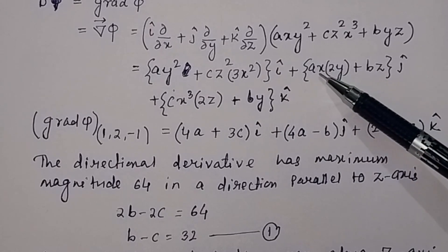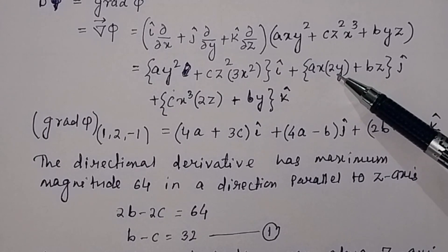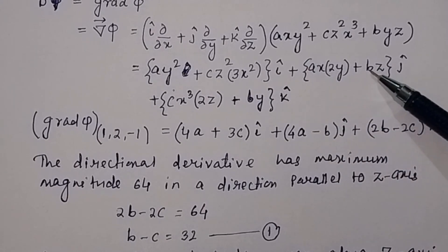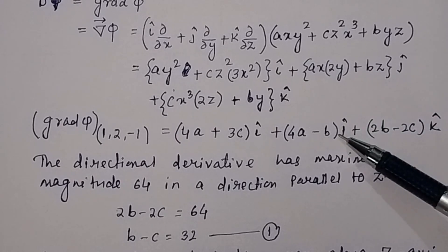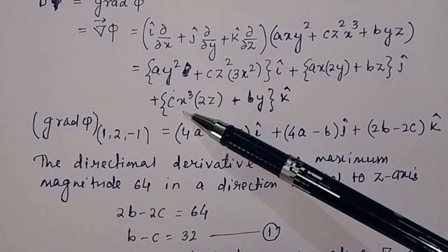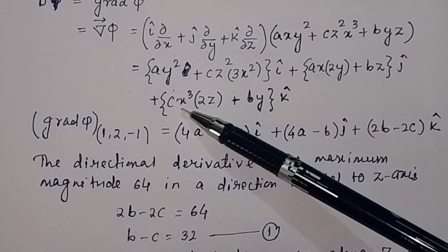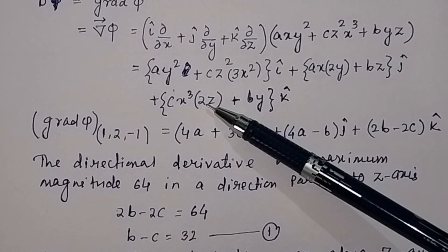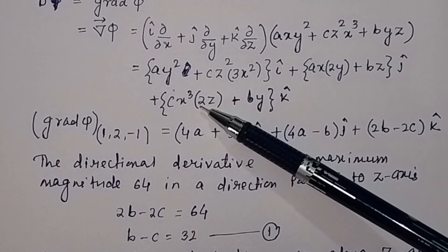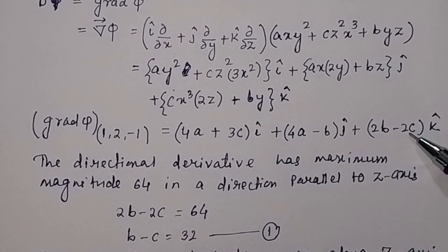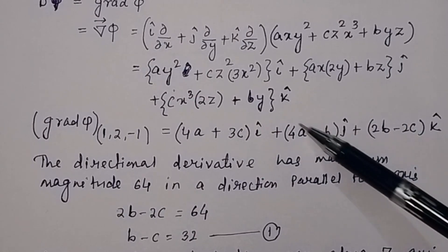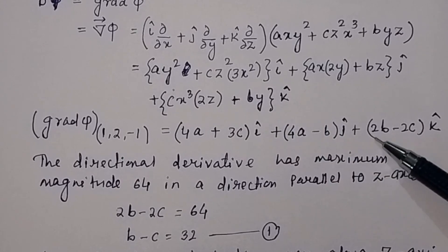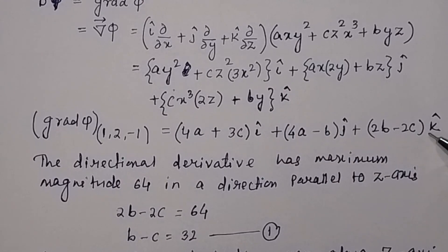For the j-component: ax · 2y = a·1·2·2 = 4a. And bz = b·(-1) = -b. So the j-component is (4a - b) j-cap. For the k-component: cx³ · 2z = c·1·2·(-1) = -2c. And by = b·2 = 2b. So the k-component is (2b - 2c) k-cap.